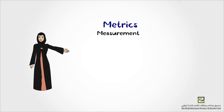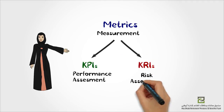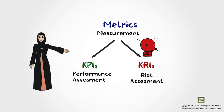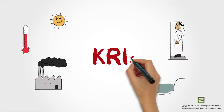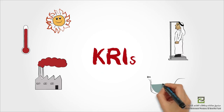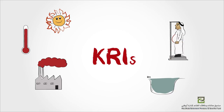When metrics provide an early warning regarding an increased risk exposure in certain areas of operations, they become key risk indicators, KRIs. By monitoring KRIs, we identify the problems expressed by them early on. We can take a proactive approach of mitigating risks before they eventuate and have more serious consequences.